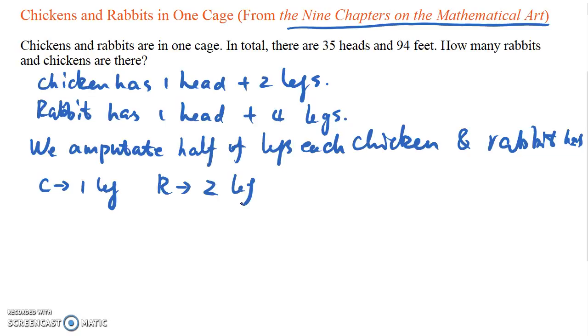I know this is not natural, but just bear with me for a moment. So in this case, the total number of legs changes from 94, which is given in the problem, to 47, which is half of the original legs.